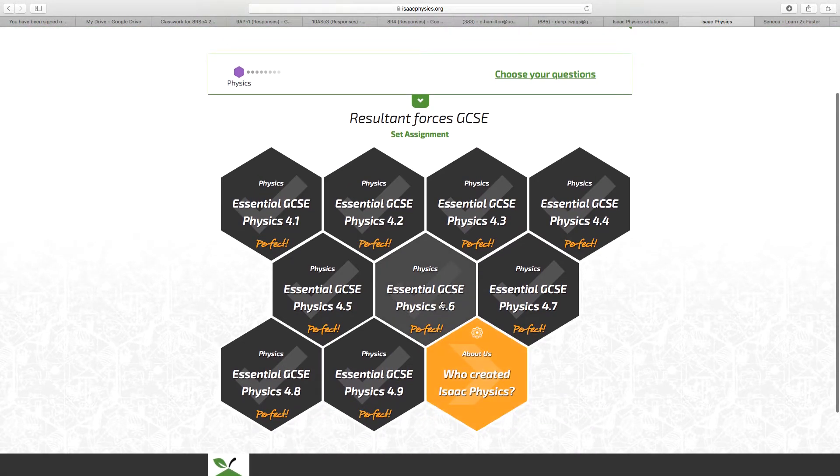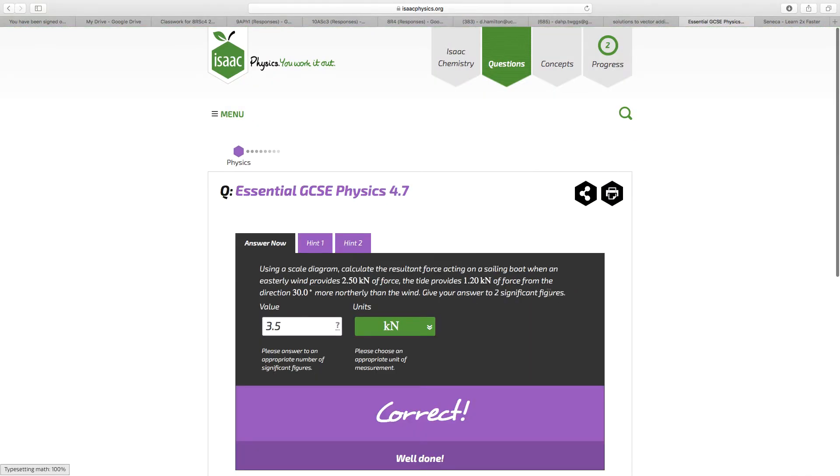So we're on 4.7 now, I think. Using a scale diagram, calculate the resultant force acting on a sailing boat. When an easterly wind, that is a wind from the east, 2.50 kN, note the 3 sig figs. The tide provides 1.20 kN from a direction 30 degrees more northerly than the wind. Give the answer to 2 sig figs. So let's have a look at 4.7.